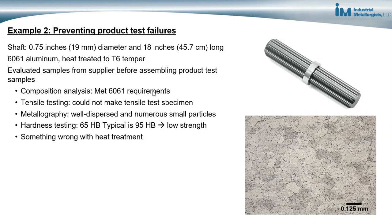We did a composition analysis and found that the material didn't meet the chemical composition requirements for 6061. We couldn't do tensile testing because we couldn't make a tensile test specimen from the component due to its geometry. We looked at the metallography and saw well-dispersed, numerous small particles — no apparent problem with the microstructure. But we also did hardness testing. Hardness is not a formal specification for this alloy, but the typical hardness for 6061-T6 is 95 Brinell; we measured 65 Brinell, indicating the material had low strength.